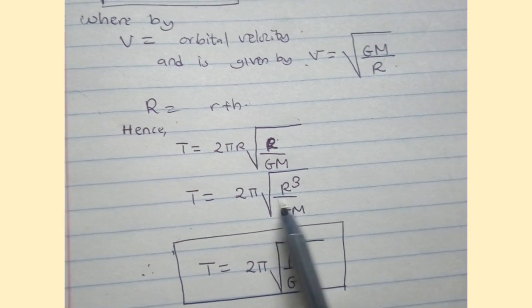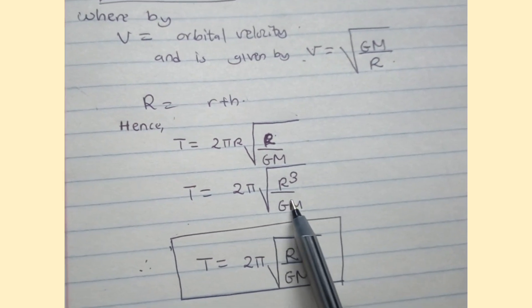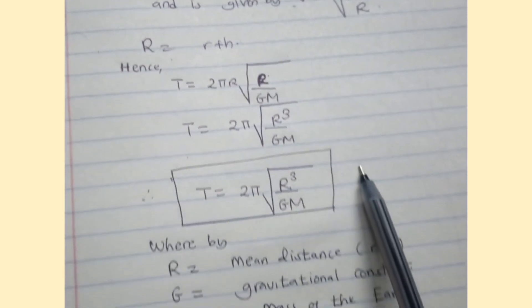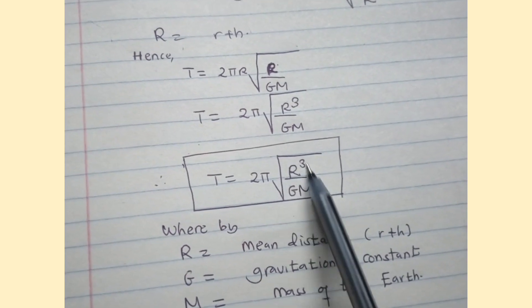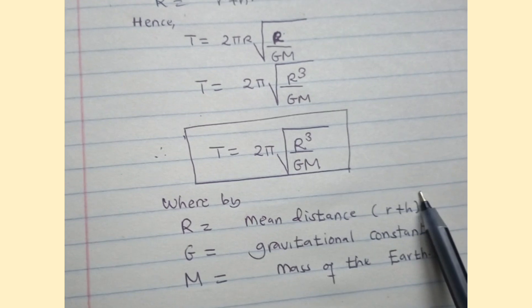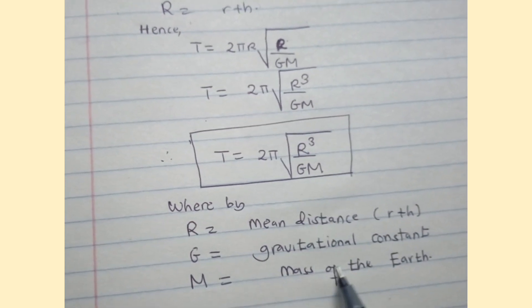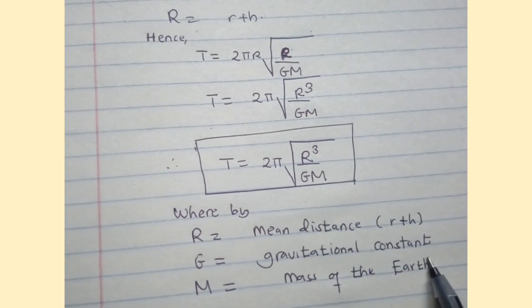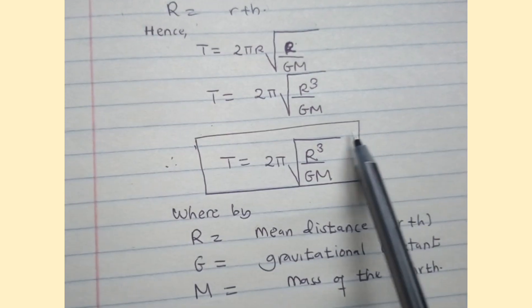Capital R is the mean distance which equals the summation of small r and h. Capital G is the gravitational constant and capital M is the mass of the Earth.